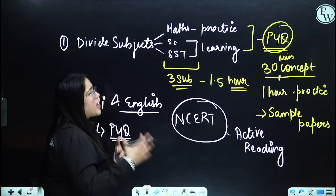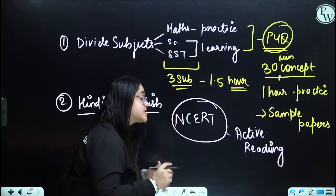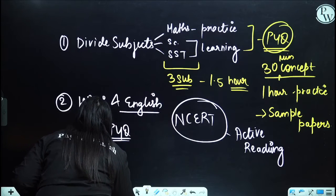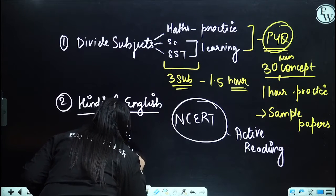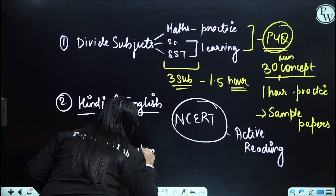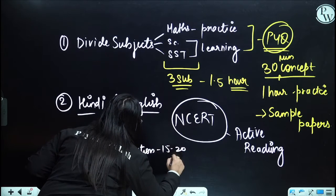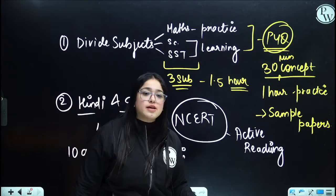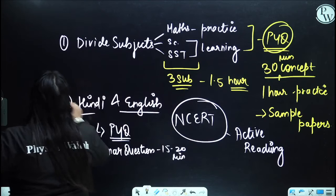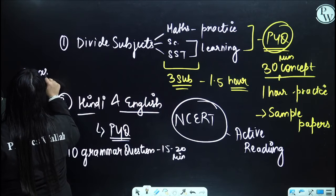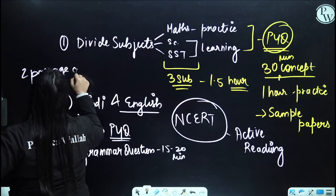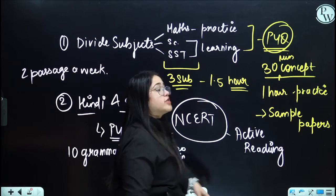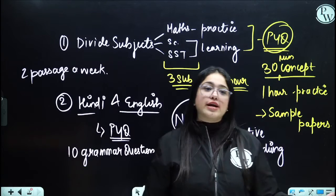Coming to the grammar part, you have to practice at least 10 questions a day. 10 grammar questions for Hindi and English both. You have to keep 15 to 20 minutes for it. That's enough. In order to solve unseen passages, try to solve two passages a week. Two passages a week. For both of them. Two passages for Hindi, two passages for English. In that way, you'll be able to manage your time nicely.